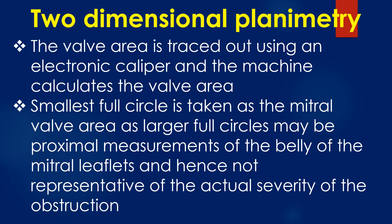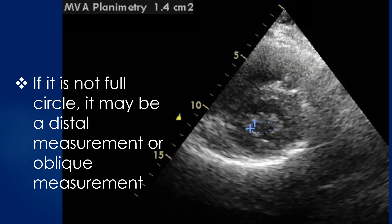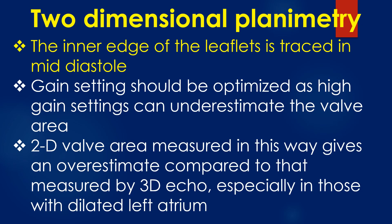In two-dimensional planimetry, the valve area is traced out using an electronic caliper and the machine calculates the valve area. The smallest full circle is taken as the mitral valve area, as larger full circles may represent proximal measurements of the belly of the mitral leaflets and are not representative of the actual severity of obstruction. If it is not a full circle, it may be a distal or oblique measurement. Mitral valve area by planimetry is usually obtained from the parasternal short axis view, and can also be obtained from the basal transgastric short axis view by transesophageal echocardiography. The inner edge of the leaflets is traced in mid-diastole, and gain settings should be optimised, as high gain settings can underestimate the valve area.